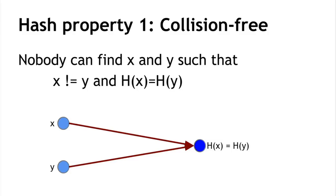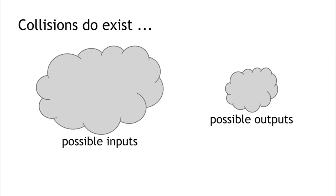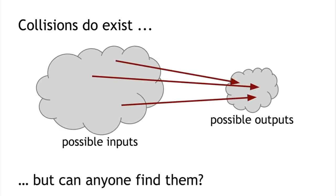I said nobody can find a collision — I didn't say there is no collision, because there has to be one. The input space is infinite while the output space is only 2^256 possibilities, so many inputs must map to the same output. Collisions do exist. The question is whether any collisions are findable by regular people using regular computers. There is a method guaranteed to work: pick 2^130 randomly chosen inputs, and there's a 99.8% chance at least two will collide. But this takes an astronomical number of steps — effectively longer than the age of the universe.